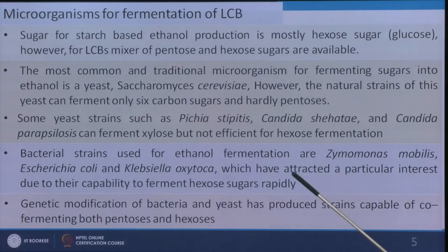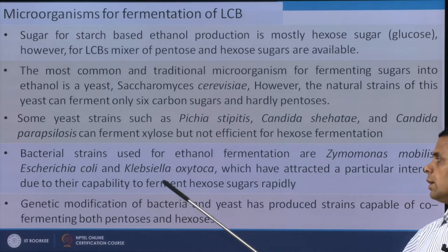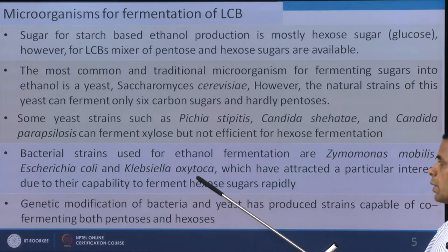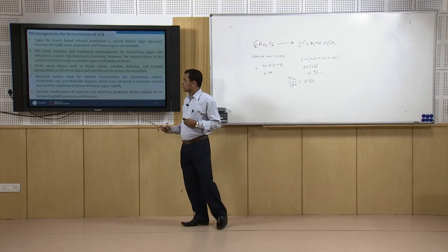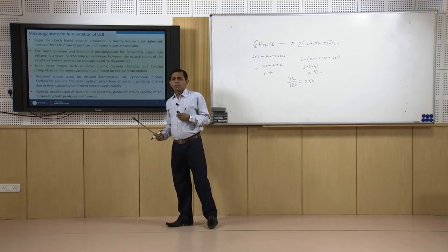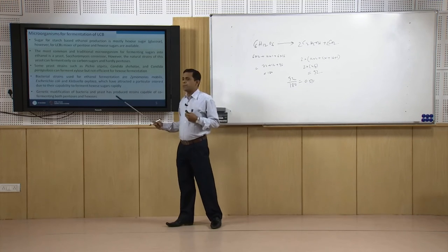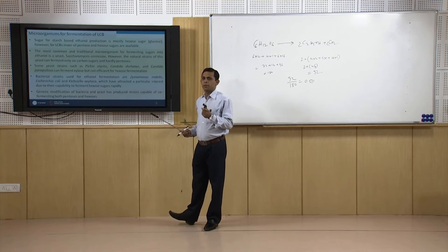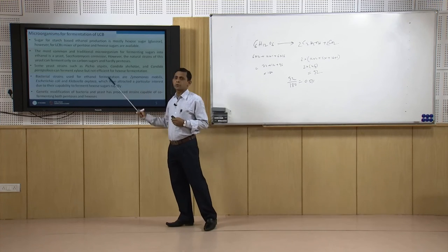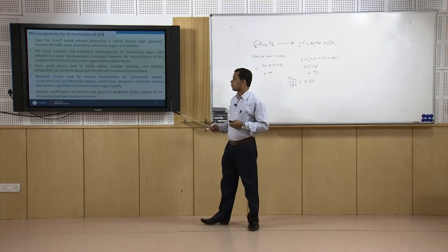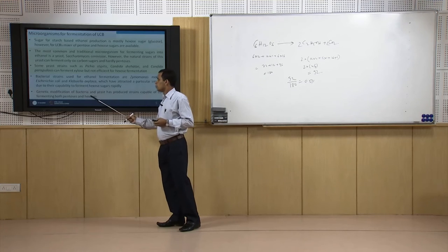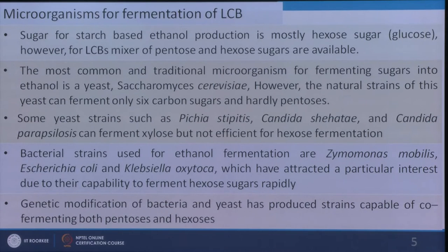Examples of bacteria include Zymomonas mobilis, Escherichia coli, and Klebsiella oxytoca. Efforts are ongoing to develop more efficient strains equally suitable for both pentose and hexose sugars. Genetically modified microorganisms are being developed through experiments to create new strains suitable for both types of sugar for ethanol fermentation.